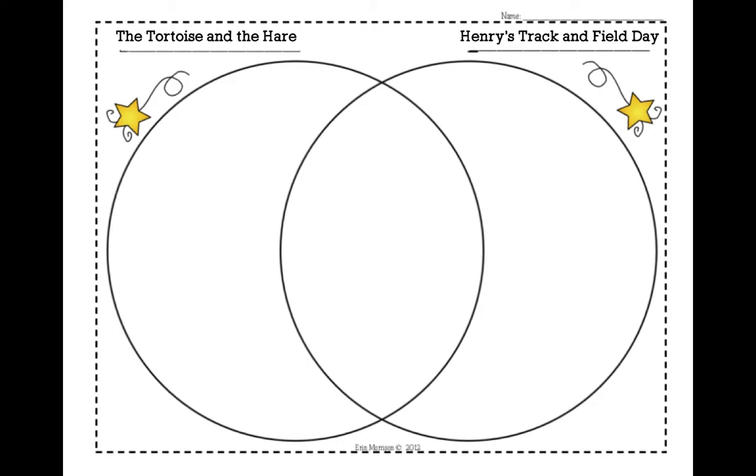So all the events that happened in only the tortoise and the hare, I'm going to put on the left side of the diagram, and all of the events that happened only in Henry's track and field day, I'm going to put on the right side of the Venn diagram. All right, so let's get started.